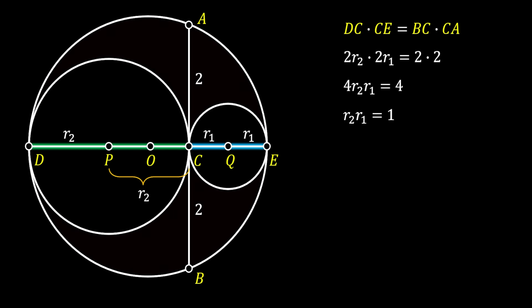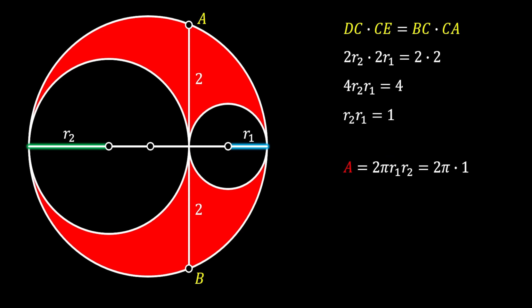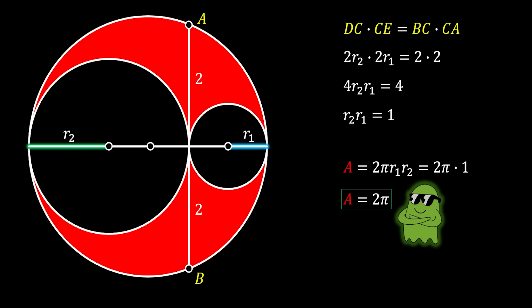Now let's find the red shaded area. We already know from the first method that this area equals the difference between the area of the big circle and the combined areas of the two inner circles, which simplifies to 2π·R1·R2. Substituting R1·R2 = 1, we again conclude that the red shaded area equals 2π square units.